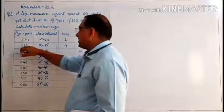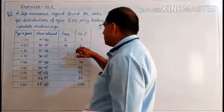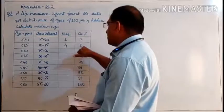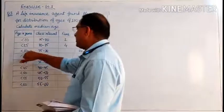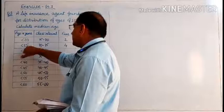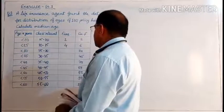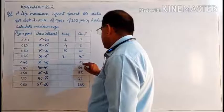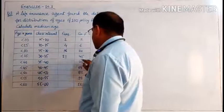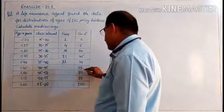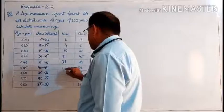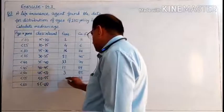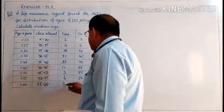Similarly, 24 policyholders are having less than 30, and 6 are having less than 25, so 25 to 30 gives 24 minus 6 = 18. Then 45 minus 24 = 21. Then 78 minus 45 = 33. Then 89 minus 78 = 11. Then 92 minus 89 = 3. Then 98 minus 92 = 6. And 100 minus 98 = 2 policyholders.